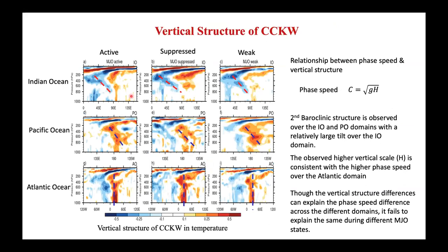Examining the vertical structure of CCKWs through temperature anomalies: over the Indian Ocean and Pacific Ocean, we see a strong second baroclinic vertical structure with a significant tilt — larger over the Indian Ocean than the Pacific. Over the Atlantic, the structure is more of a first baroclinic mode with a higher equivalent depth, which is consistent with the observed faster phase speed over the Atlantic domain. This indicates that vertical structure varies across geographical domains and influences phase speed.